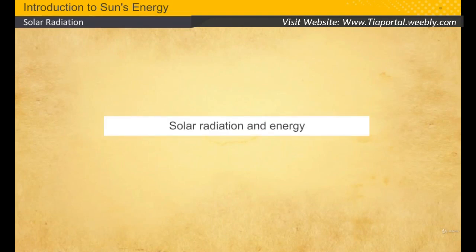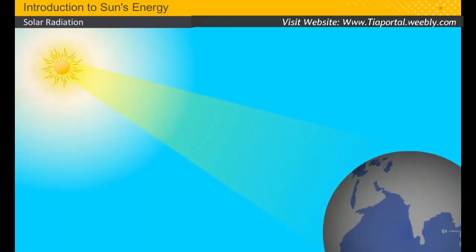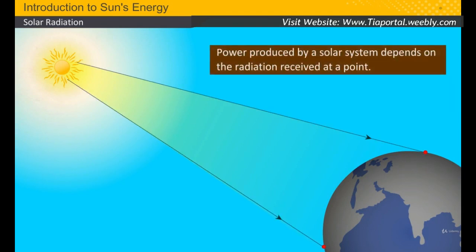In the previous video, you understood the difference between power and energy. Here you will learn about the different types of solar energy and solar radiation. The Sun radiates energy, but the amount received varies depending on location on Earth and other factors. If you understand radiation, you can predict how much power a solar PV system will produce at any given point.